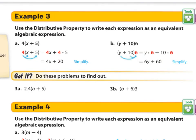Example 3: Let's practice the distributive property with algebraic expressions. We have 4 times (x + 5). Distribute the 4 inside the parentheses and you'll have 4x plus 20. This is actually complete because you cannot add these two unlike terms. On the other side, 6 times (10 + y): 6 times 10 is 60, 6 times y is 6y, giving you 6y plus 60.